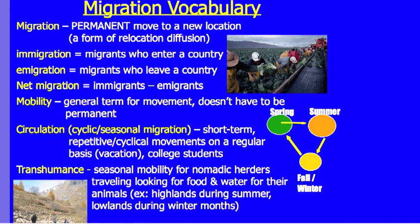Mobility is a general term for movement that doesn't have to be permanent — like going to school every day or driving to the grocery store. Circulation, also called cyclical or seasonal migration, involves repetitive short-term movements on a regular basis, such as returning to the same vacation spot every year or college students moving between college and home each fall and spring.